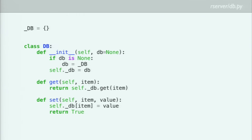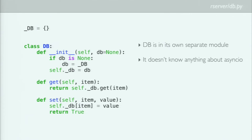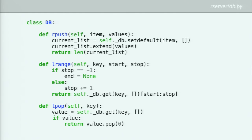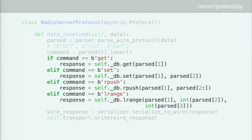The DB class is where all the logic happens for Redis commands like get, set, and list manipulation. It's essentially an abstraction over a dictionary, and the main benefit is that the DB is a separate module — it doesn't know anything about Async IO. You can easily write a unit test for it: create a DB, call set foo bar, assert DB.get equals bar. For the list commands, RPUSH manipulates a list, LRANGE looks up a key and slices based on start and stop, and LPOP pops from the front. We keep a nice separation between the async code and our logic.